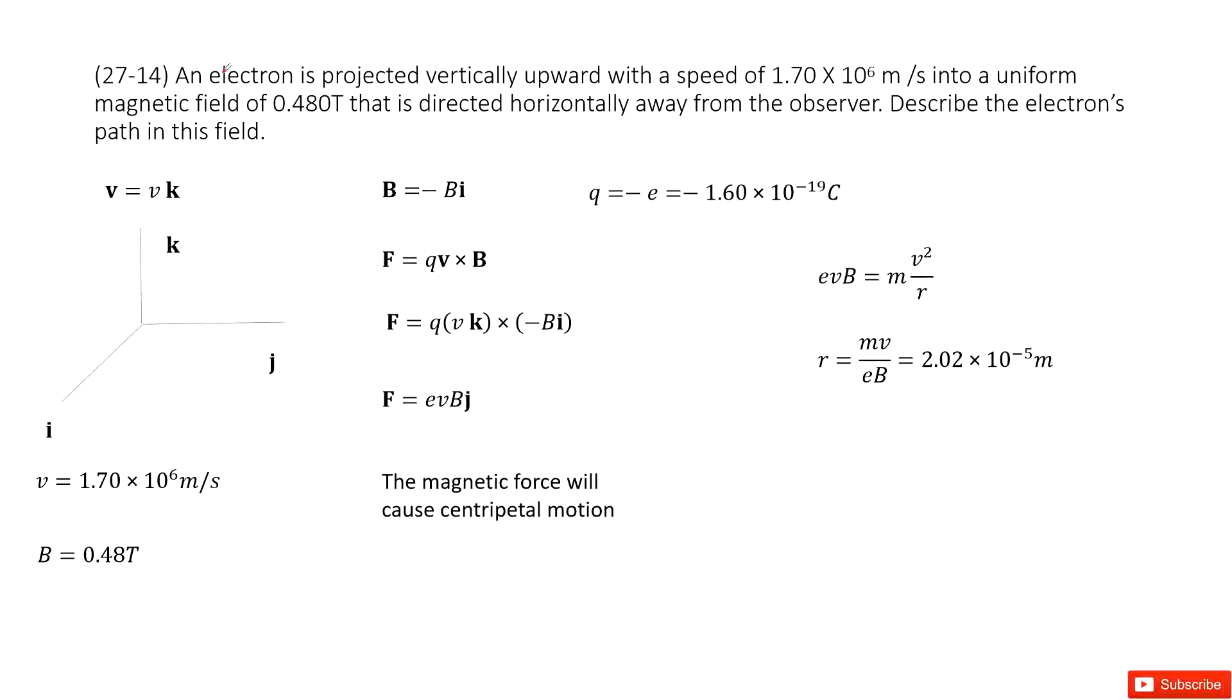So there we can see we have an electron. Electron carries negative charge. So the charge Q equals negative e. e is the unit electron, unit charge. So we write it there.